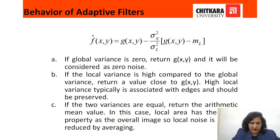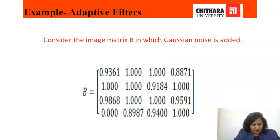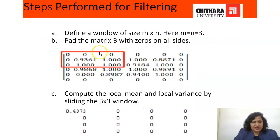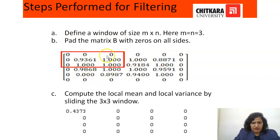So we have done three cases: global variance is zero; local variance is high compared to global variance; and two variances are equal. Now mathematically how they will happen — we will do it by example. Let B be an image matrix which is corrupted with noise and we have to restore it. Firstly we will define a window size M by N — that is 3 by 3.